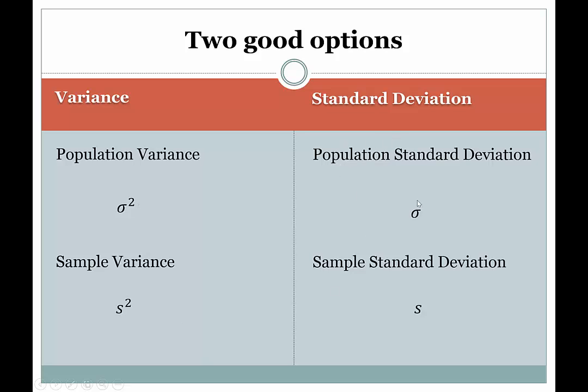For standard deviation, for the population standard deviation, we're going to use lowercase sigma (σ), but without the square this time. And the sample standard deviation, just s, and again, without the square.